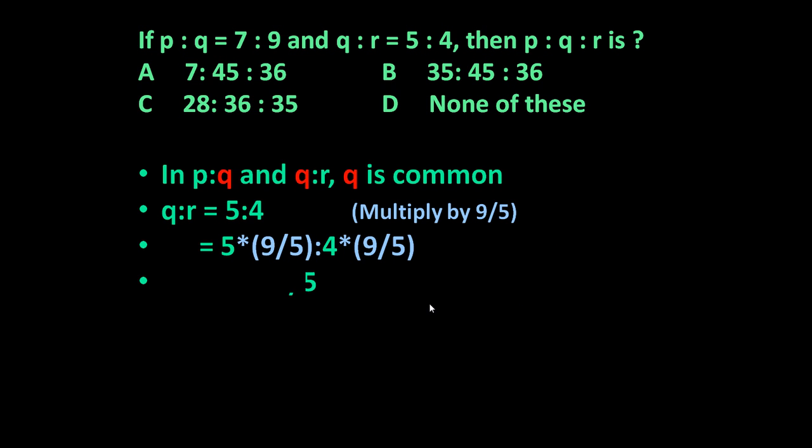Why we have done this? Because in place of 5 we want 9. So if we multiply this 5 by 9 by 5, 5 will cancel, 9 will be there, and this 4 into 9 by 5. 4 into 9 is 36 divided by 5.